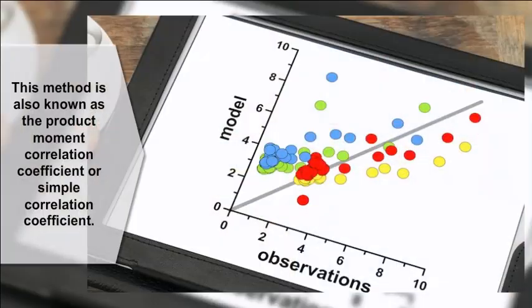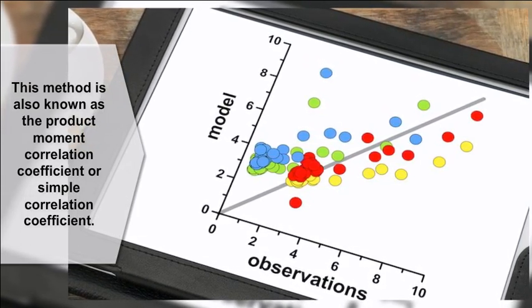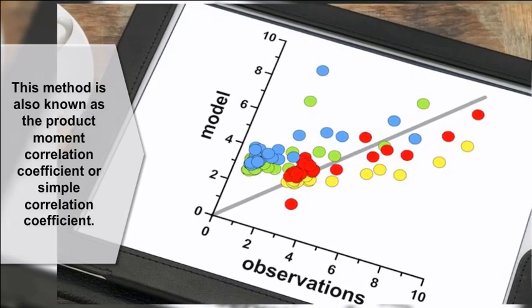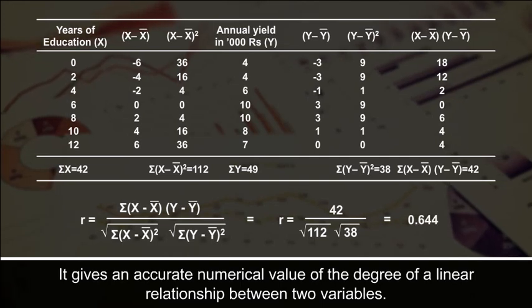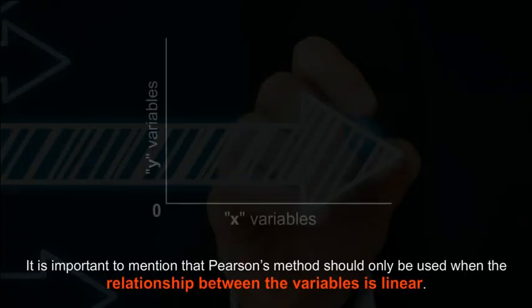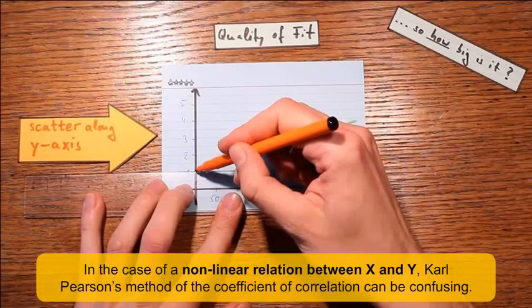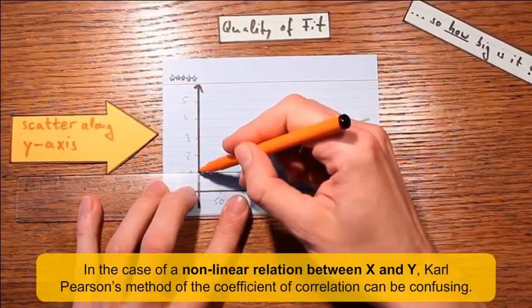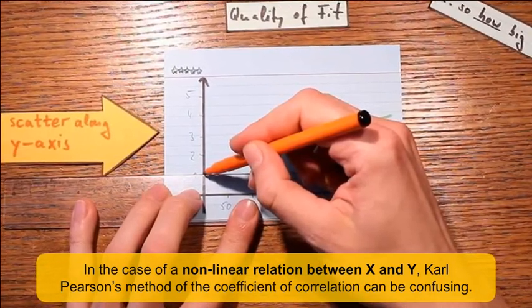Carl Pearson's Coefficient of Correlation, also known as the product moment correlation coefficient or simple correlation coefficient, gives an accurate numerical value of the degree of linear relationship between two variables. It is important to note that Pearson's method should only be used when the relationship between variables is linear. In the case of a non-linear relation between X and Y, Carl Pearson's method can be confusing.